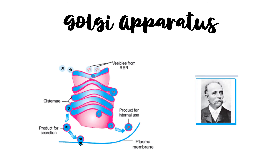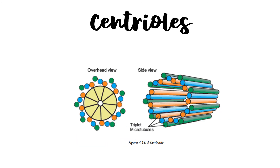Moving on to our next organelle, which is the Golgi apparatus. It was discovered by an Italian physician named Camillo Golgi. He discovered a set of flattened sacs which he referred to as cisternae. In this set, many cisternae are stacked over each other, and the complete set is called the Golgi apparatus or Golgi complex. It is found in both plant and animal cells. It modifies molecules coming from the rough endoplasmic reticulum and packs them into small membrane-bounded sacs called Golgi vesicles, which can be transported to various locations in the cell or to its exterior in the form of secretions.